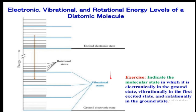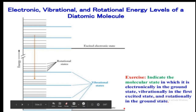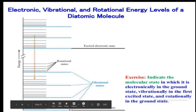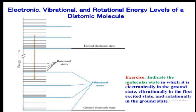The electronic states are denoted by the principal quantum number N: the ground state is N = 1, then N = 2, N = 3, etc. The vibrational quantum number is ν (nu): the ground vibrational state is ν = 0, then ν = 1, 2, 3, etc. The rotational quantum number is J: the ground state is J = 0, then J = 1, 2, 3, etc.